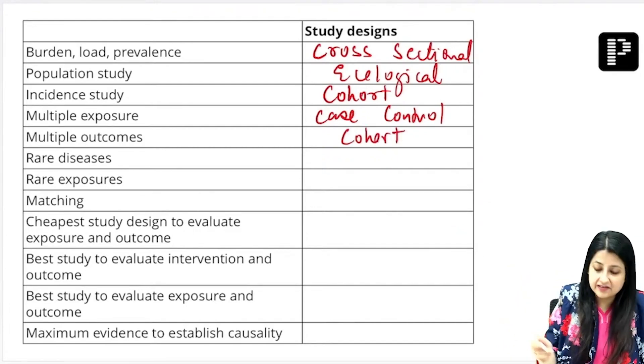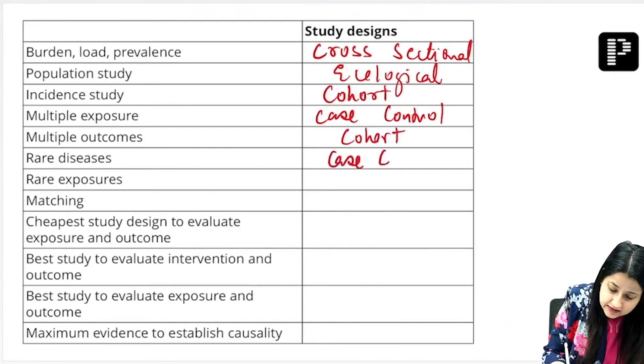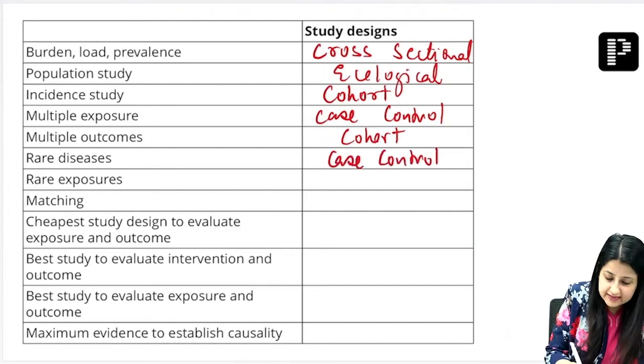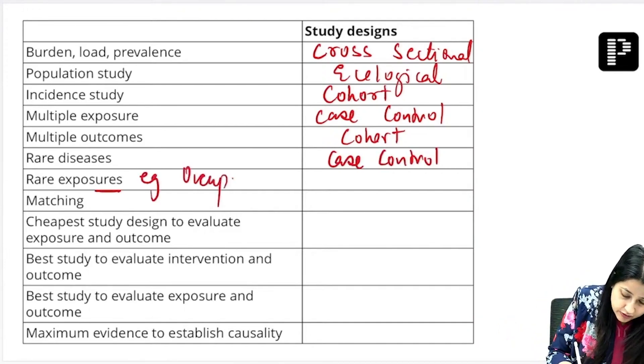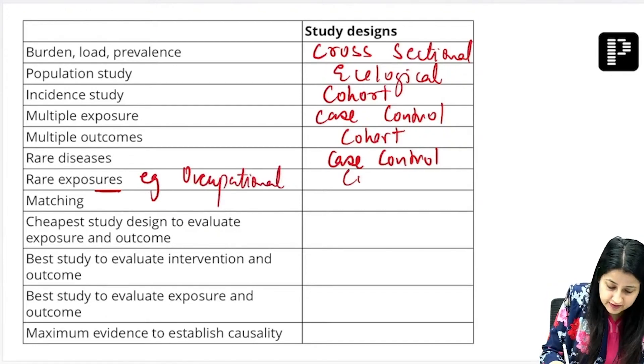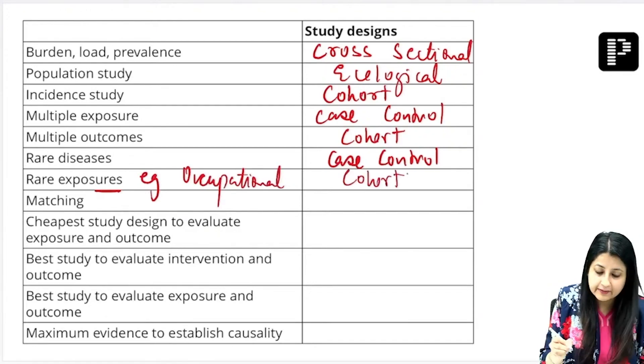Rare disease—rare disease always case control. Rare exposures, guys, rare exposures, occupational exposure can come as your MCQ. If I talk about rare exposure, it is always going to be a cohort study.